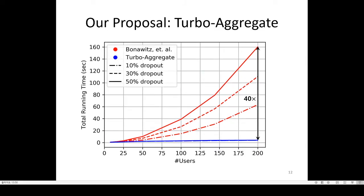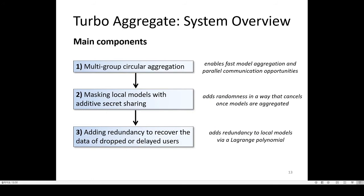The answer is yes, and we propose a new protocol named Turbo Aggregate to overcome the quadratic barrier. We demonstrate that the overhead is almost linear. Here is the high-level system overview of Turbo Aggregate. Turbo Aggregate has three main components. The first part is multi-group circular aggregation, which enables fast model aggregation. The second component is masking local models with additive masking to provide the privacy of individual models. The key component of Turbo Aggregate is the third part, which utilizes coded computing to add redundancy in the system as a way of tolerating dropped users.